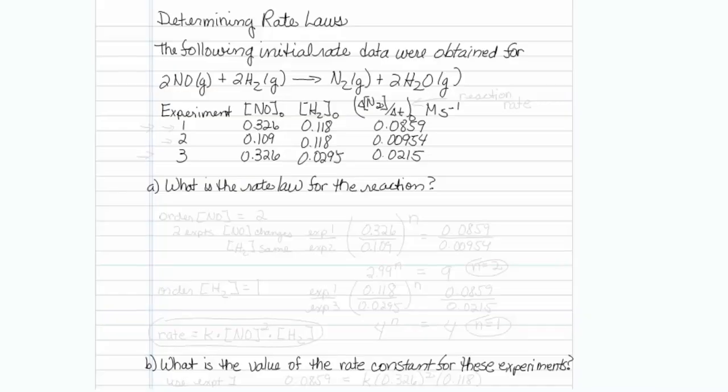We're given some initial rate data. The rate of the experiment is being taken at a time very early into the reaction where we know the initial NO concentration and the initial H2 concentration. This rate of change of N2 over T is actually equal to the reaction rate, since the coefficient of N2 in the reaction is 1.